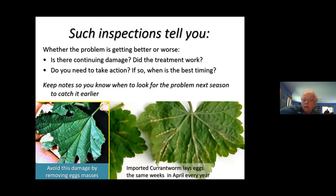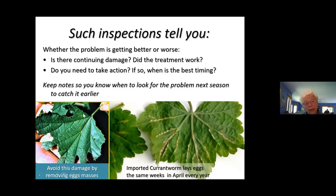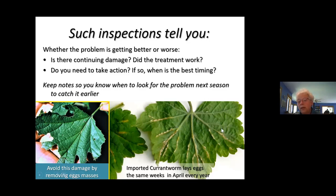By looking closely, you can also tell whether the problem is getting better or worse — is the damage continuing? Here's a chewed-up leaf with dry brown edges: whatever chewed it up is gone. In this case I happen to know it was the European gooseberry sawfly — it causes a lot of damage on gooseberries and currants. Seeing it one year, it's too late to do anything, but the next year in early spring you can go and look for the eggs. In April, look for the few leaves with eggs and remove them — that's it.